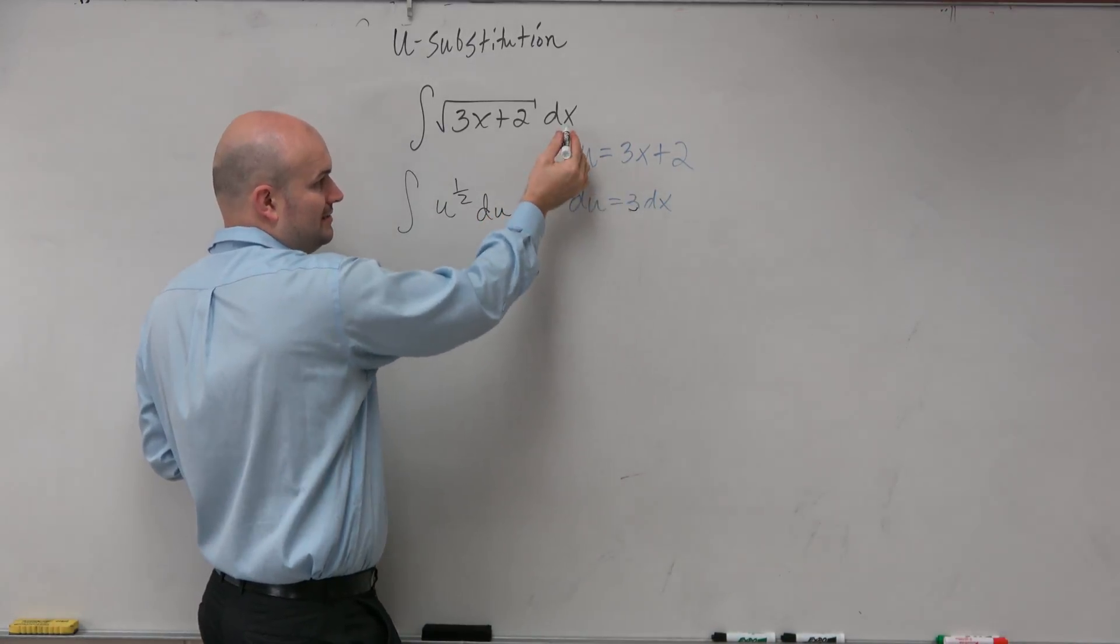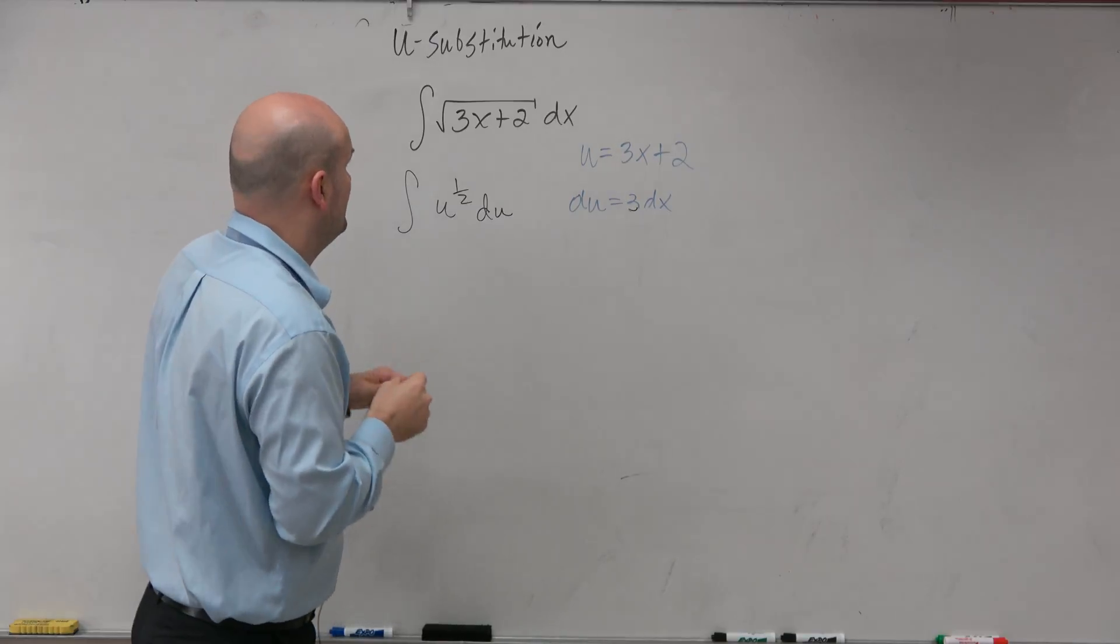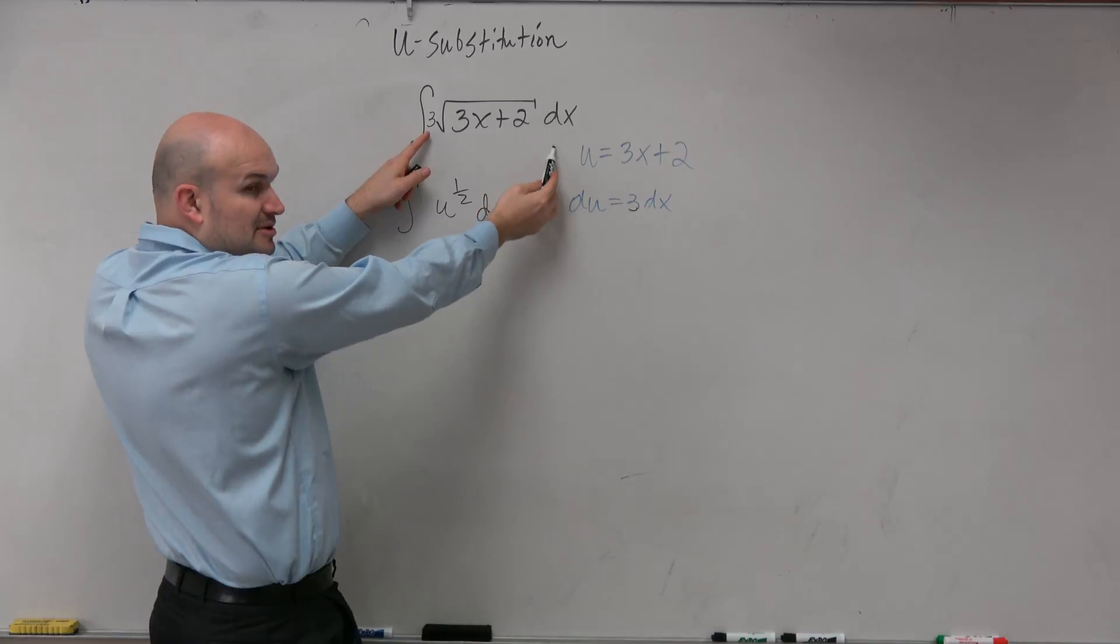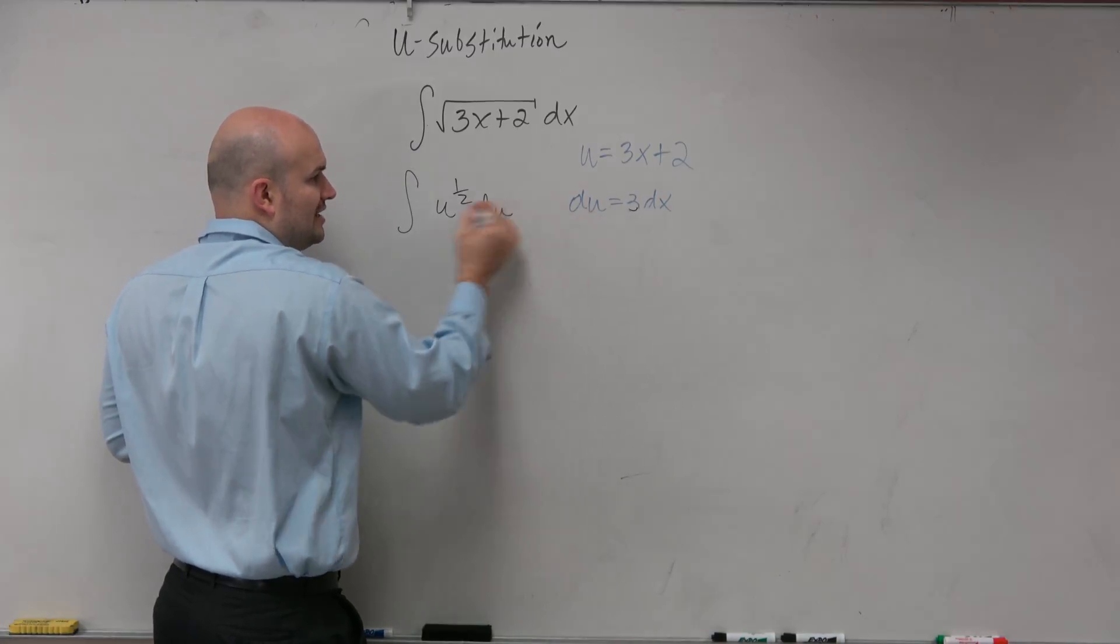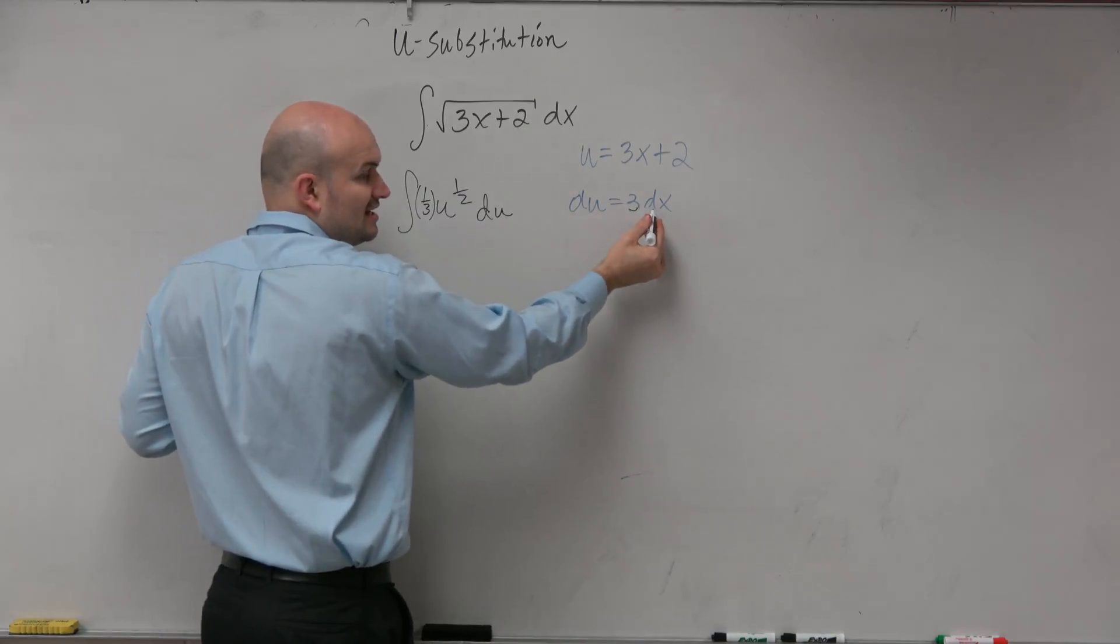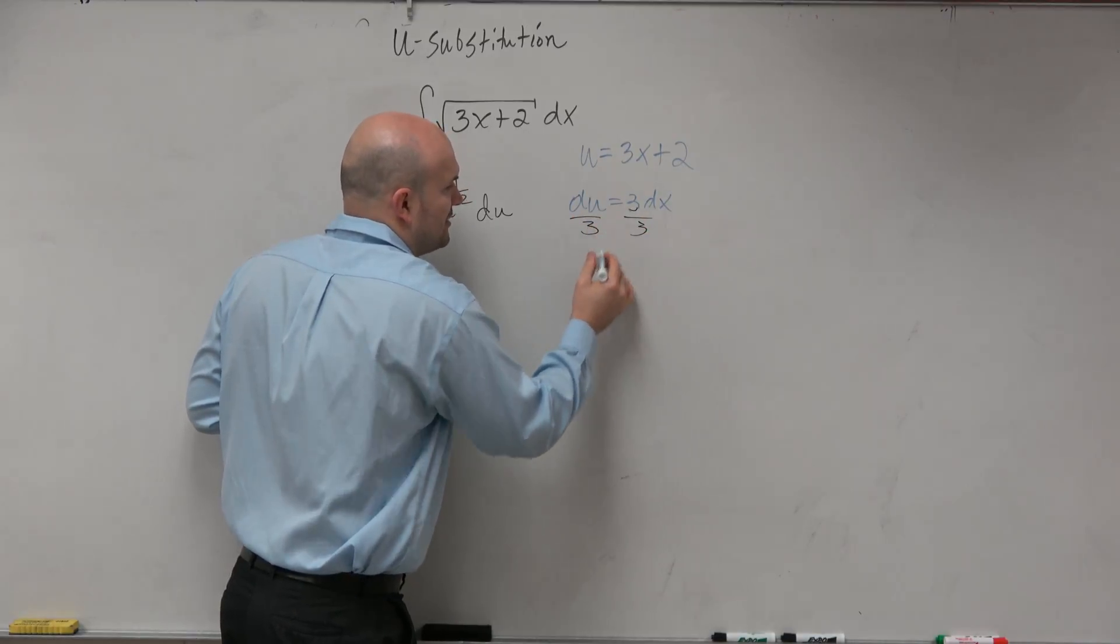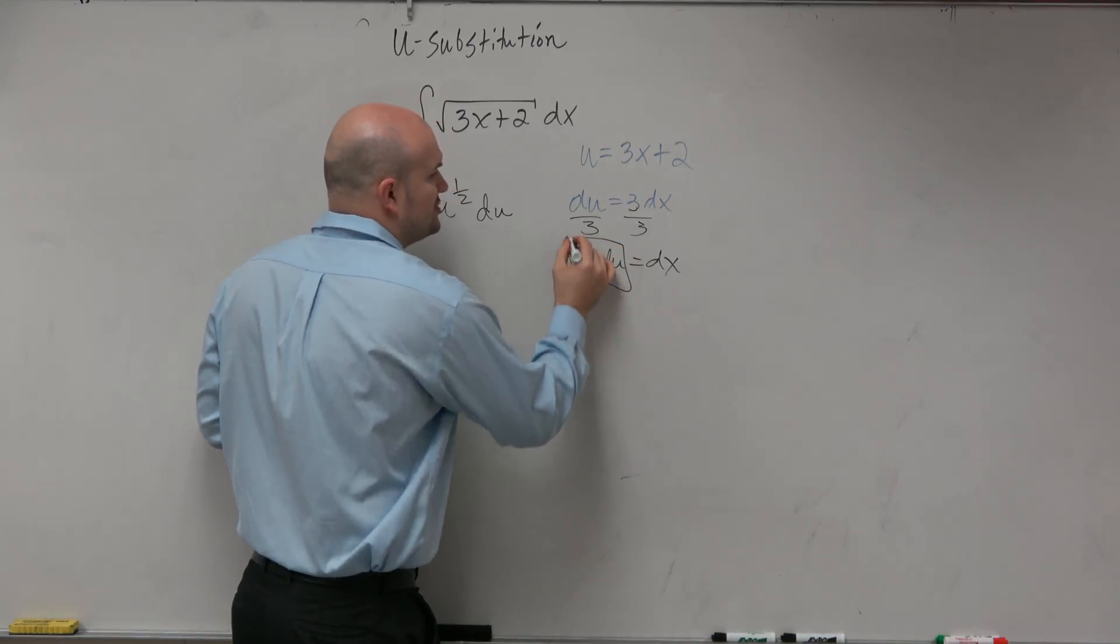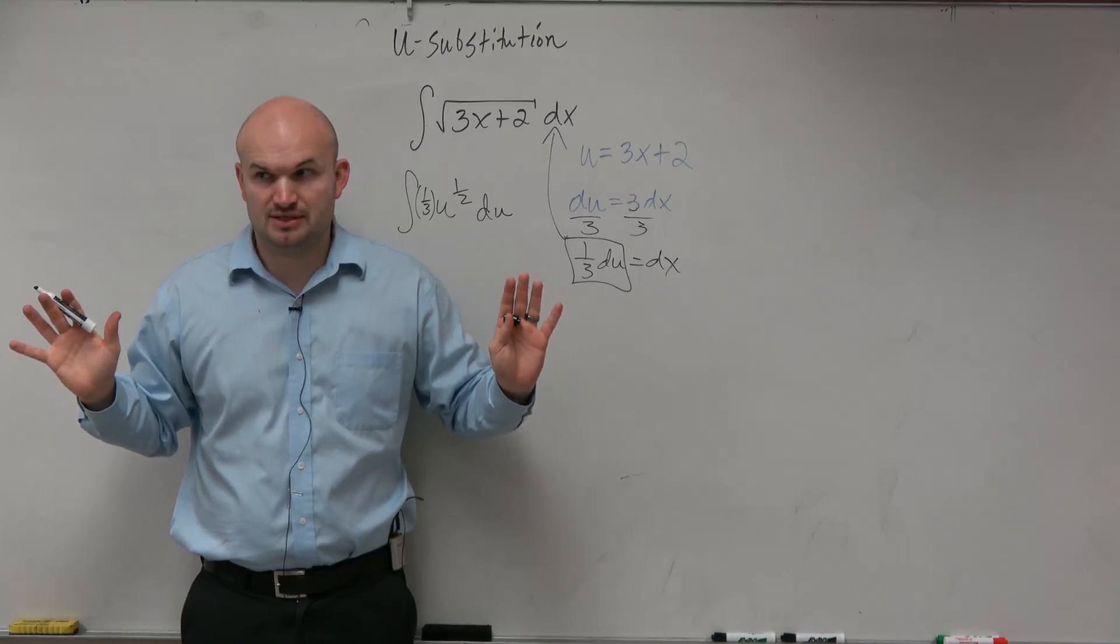So there is no 3 in this problem. There's no multiply by 3 here. If I had a 3, then I would have everything I needed. I'd have a 3 dx, and I'd be good to go. But the problem is I don't have a 3 here. So you could say, well, I'm just going to multiply by 1/3 to get 1/3 du. Because what is dx? We want to figure out what dx equals to. You could divide by 3. 1/3 du is equal to dx. So basically what you're doing is you're substituting in 1/3 du in for dx. Does anybody else have any questions on that?